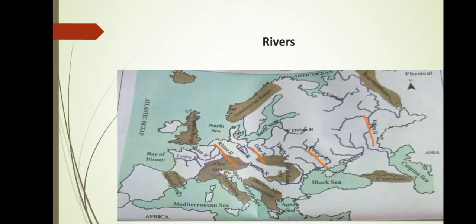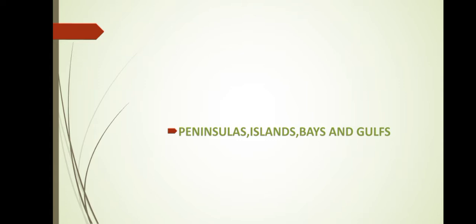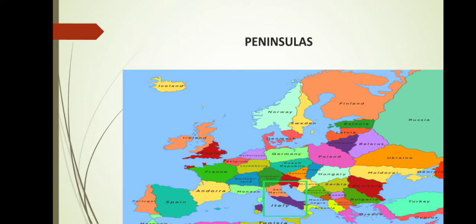Now let us move forward towards peninsulas, islands, bays and gulfs. The seacoast of Europe is very jagged — jagged means zigzag, it is not straight. Italy is surrounded on three sides by the sea. Can you identify Italy on the map? Down in the southern part of Europe you can see a country called Italy. It is a peninsula. A landmass that is surrounded by sea on three sides and connected to the main land on the fourth side is called a peninsula.